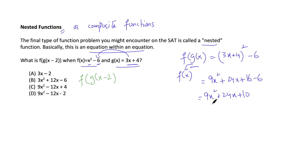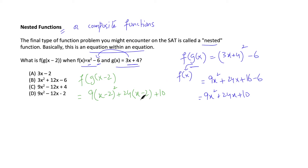But we're not done — our final answer requires f(g(x − 2)). So now we replace x with (x − 2) in the expression 9x² + 24x + 10. We get: 9(x − 2)² + 24(x − 2) + 10. Let's open this up — (x − 2)² = x² − 4x + 4.